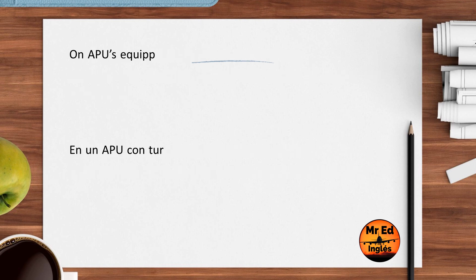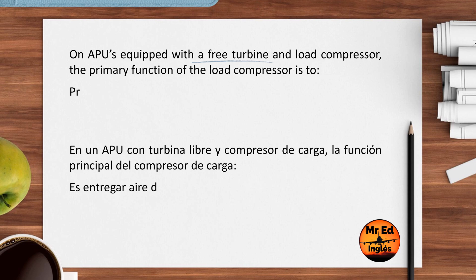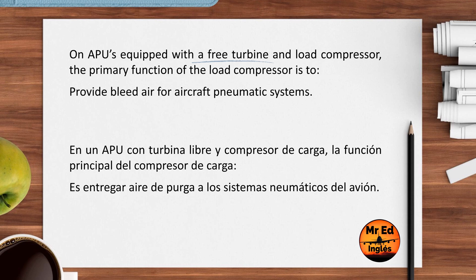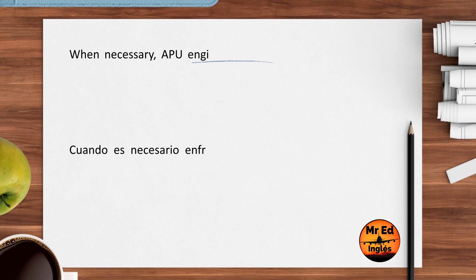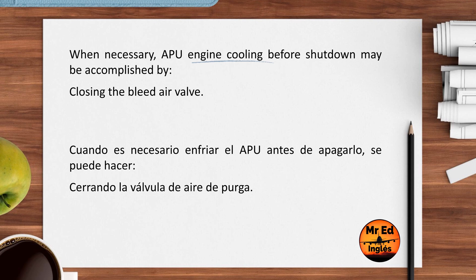On APUs equipped with a free turbine and load compressor, the primary function of the load compressor is to provide bleed air for aircraft pneumatic systems. When necessary, APU engine cooling before shutdown may be accomplished by closing the bleeder valve.